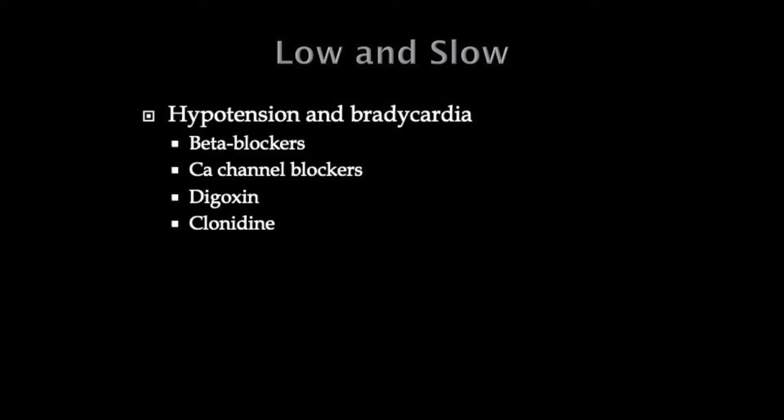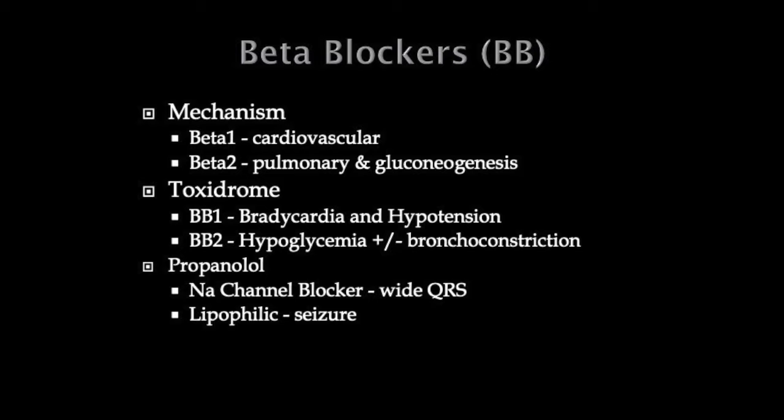Low and slow: if you have a patient who is bradycardic and hypotensive, think three big causes: cardiac — an actual dysrhythmia or inferior MI; electrolytes — particularly hyperkalemia, where some patients won't get classic T-wave changes but will just get bradycardia or skipped beats; and toxicology. When you think tox, the four big ones are beta blockers, calcium channel blockers, digoxin — which is making a comeback with cardiologists — and clonidine. With beta blockers, you get cardiovascular effects; beta-2 stimulation can inhibit gluconeogenesis. Classically they present with bradycardia and hypotension. Hypoglycemia is in the textbook, but I've actually never seen it in adults — I've seen it in pediatric cases.